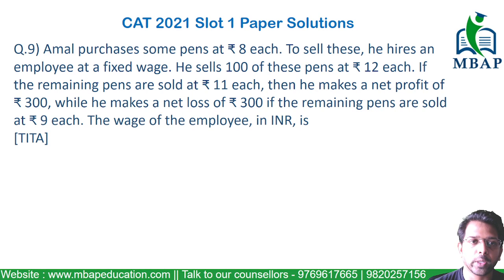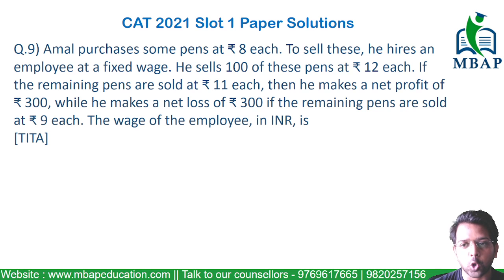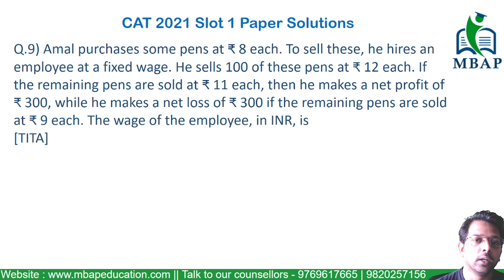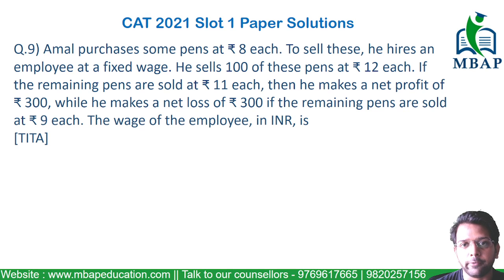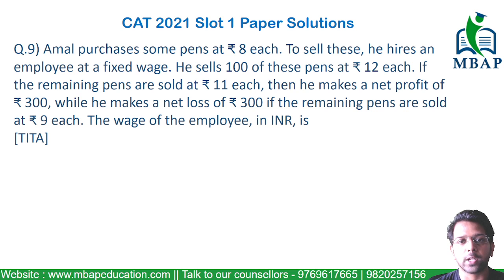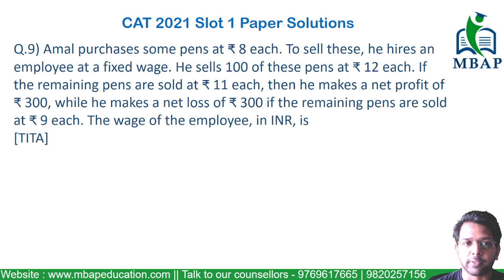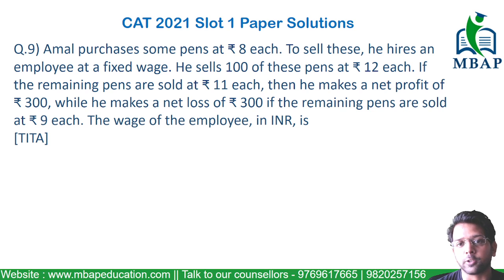Let's take the next question. Amal purchases some pens at Rs.8 each — that's the cost price per pen. To sell them, he hires an employee at a fixed wage. He sells the first 100 pens at Rs.12 each. If the remaining pens are sold at Rs.11 each, he makes a net profit of Rs.300. While if he sells the remaining pens at Rs.9 each, he makes a loss of Rs.300.